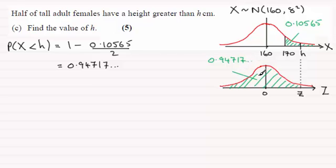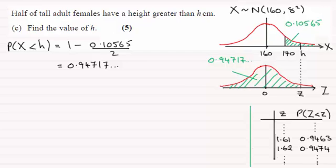And so from our tables then, we can look up the probability of being less than this given value of z. And we're looking for a value that is close to 0.94717. So I've taken just an extract here and you should find that the z value that you're interested in, which is closest to this probability here, is the 1.62, which is 0.9474.